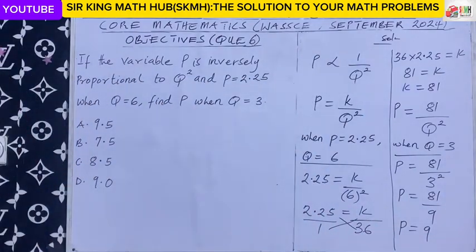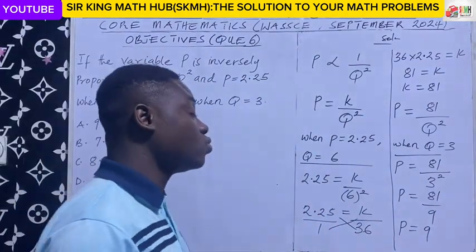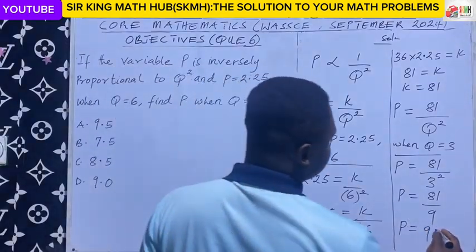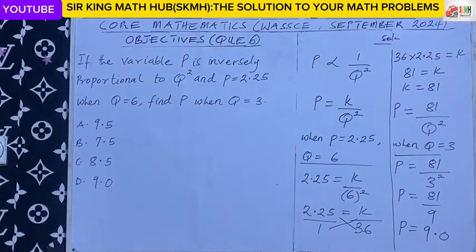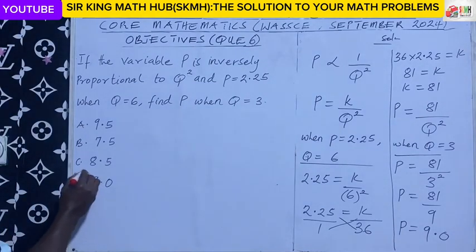Now, looking at the alternatives, they corrected the answer to 1 decimal place. So 1 decimal place, we have 9.0. So the right answer is option D.